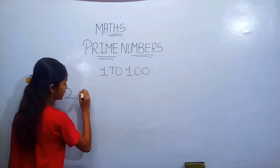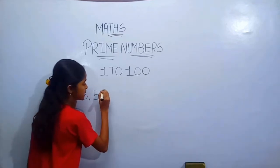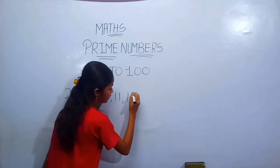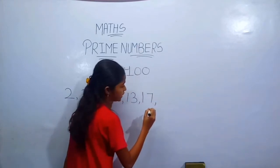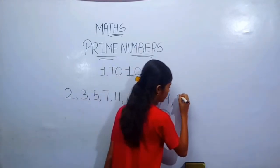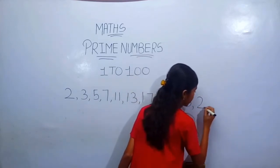They are 2, 3, 5, 7, 11, 13, 17, 19, 23, 29.